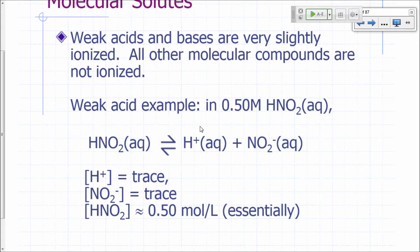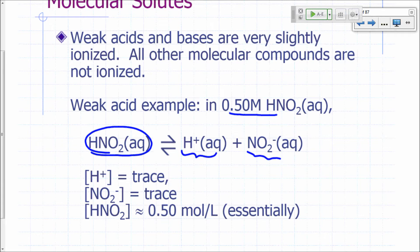Weak acids and bases are molecular compounds that are slightly ionized. That means at any given instant, only a very small fraction of these molecules are dissociated in water. HNO₂ is an example of a weak acid. If you have a 0.5 molar solution of HNO₂, a very small part of it at any given instant will be broken up into H⁺ and NO₂⁻, but these are trace amounts. The concentration of HNO₂ molecules will still be pretty much 0.5 moles per liter.